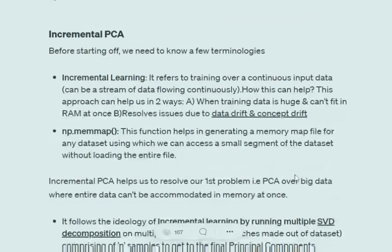These are a few problems that PCA has. Let's see different versions of PCA that can help resolve these issues. Incremental PCA helps us resolve the problem with big data. If we wish to implement PCA on big data, it can be very useful. In standard PCA, we calculate the covariance of the whole dataset and compute eigenvalues and eigenvectors, but loading the whole dataset is also difficult. Incremental PCA works on the ideology of incremental learning — training over a continuous, streaming dataset.